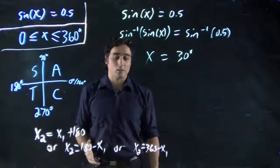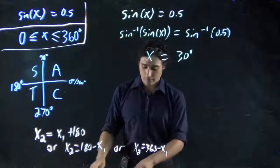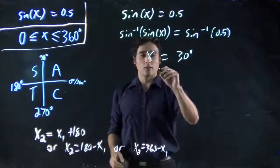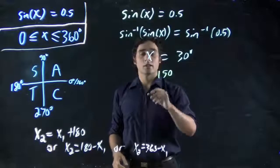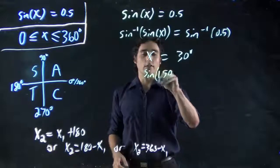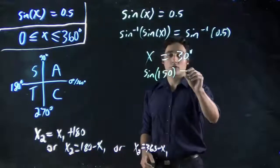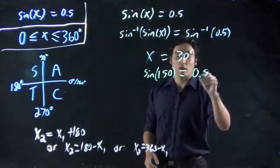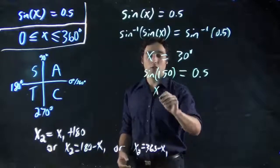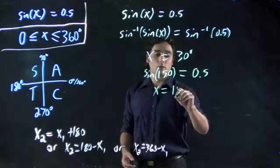And now I'm done, basically. What I do is go check my calculator. I would see, well, 150. Sign of 150. What is that? Sure enough, we'd get 0.5. So we would see another solution is x equals 150.